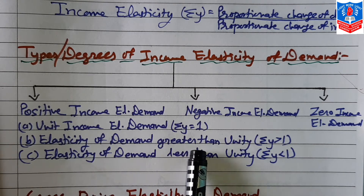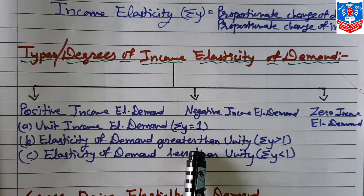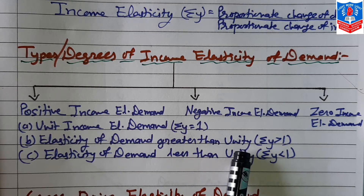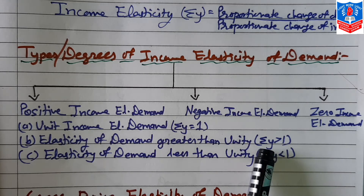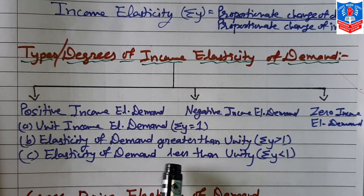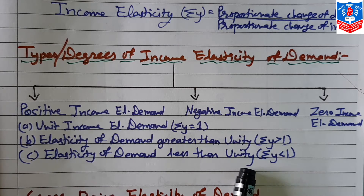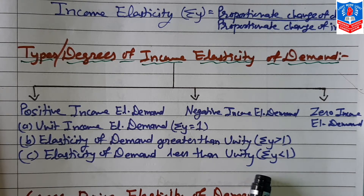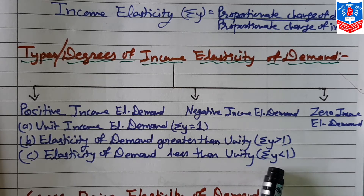The second subtype is elasticity of demand greater than unity — when the change in demand is proportionately greater than the change in income of the consumer. Here income elasticity is always more than one. Third is elasticity of demand less than unity — when the change in demand is proportionately lesser than the change in income of the consumer. Here income elasticity is always less than one.